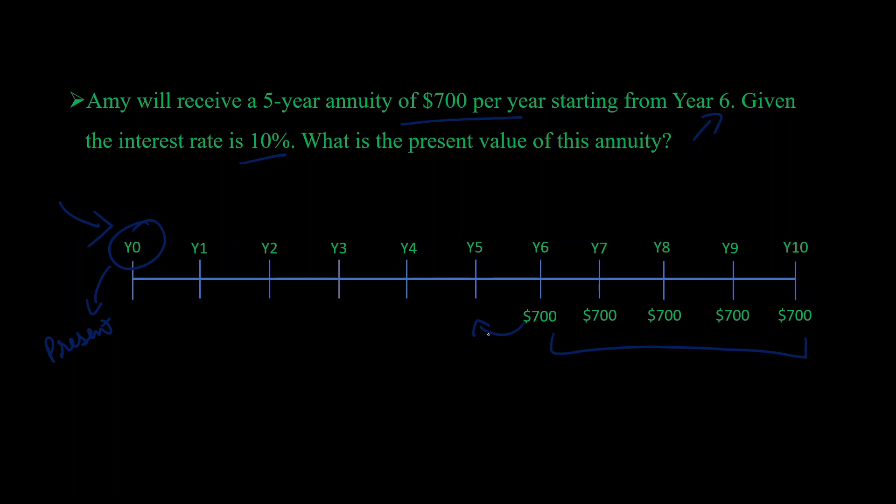This present value annuity formula will give us the value at year 5. How do we get to year 0? That's step 2: we'll need to discount this sum using the present value of an investment formula, which we've also seen in past videos. Let's start with step 1.